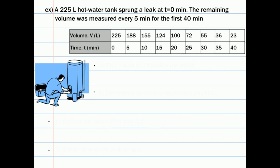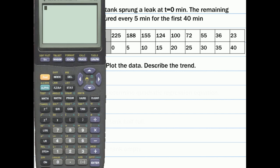Here's another regression example from our textbook. This is on page 315, number 8. We have a 225-liter hot water tank that springs a leak at 0 minutes. The remaining volume is measured every 5 minutes for the first 40 minutes. The first part asks us to plot the data and describe the trend. So we pull up our calculators, and we're going to put this data into our calculator. Do that by hitting Stat, clicking Edit.